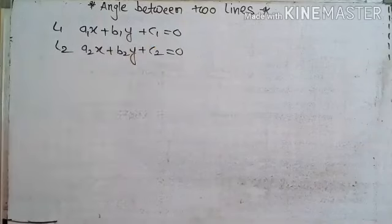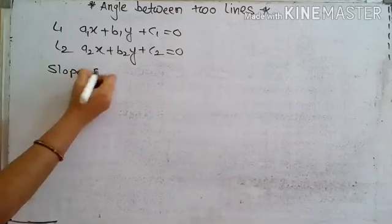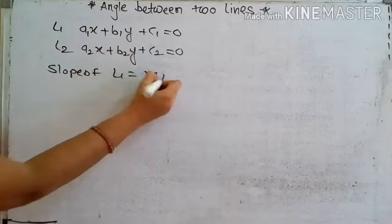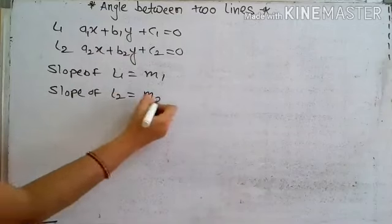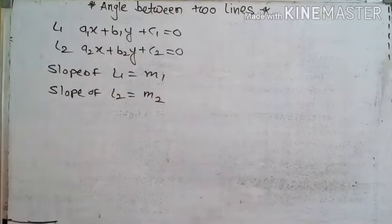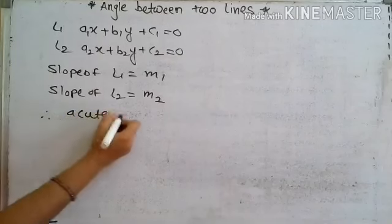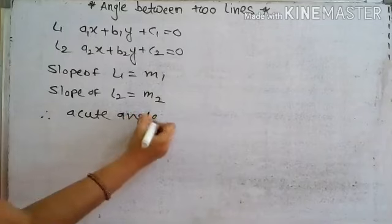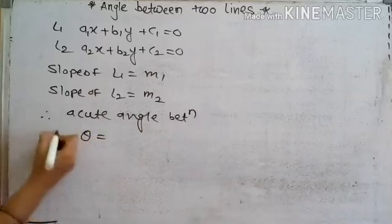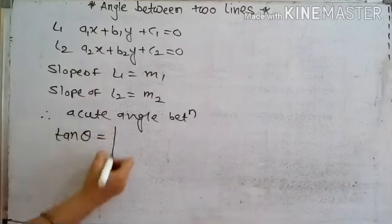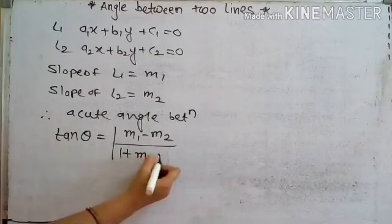First, we find the slope of L1, equal to M1, and then find the slope of L2, equal to M2. We know the formula of slope is equal to minus A upon B. Then the acute angle between the lines is given by: tan theta is equal to the mod of M1 minus M2 divided by 1 plus M1 into M2.